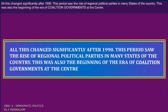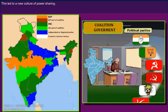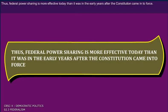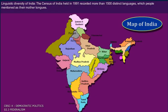All this changed significantly after 1990. This period saw the rise of regional political parties in many states of the country. This was also the beginning of the era of coalition governments at the center. This led to a new culture of power sharing, and thus federal power sharing is more effective today than it was in the earlier years after the constitution came into force.